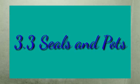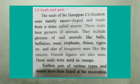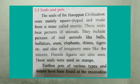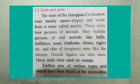Now point 3.3: Seals and Pots. Seals means a stamp design. The seals of the Harappan civilization were mainly square-shaped and made from a stone called steatite — steatite has a shape similar to soap. They include pictures of real animals like bull, buffaloes, oxen, elephants, rhinos, tigers, etc., engraved on them, and also of imaginary ones like the unicorn.